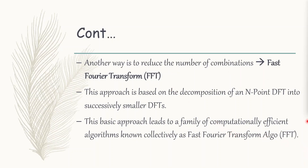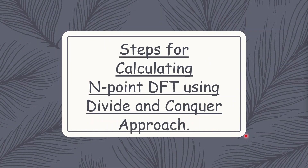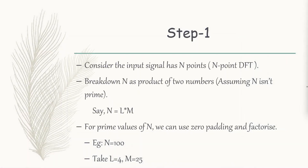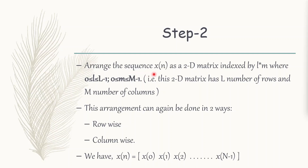In the coming slides I'll explain the steps for computing an N-point DFT using the divide and conquer approach. Step 1: Consider the input signal as N points — so it's called an N-point DFT. Break down N as a product of two numbers, assuming N equals L times M. For prime values of N we can use zero padding and factorize it. For example, if N is 500, we can take L equal to 4 and M as 25. Step 2: Arrange the sequence x(n) as a 2D matrix indexed by small l cross small m, where small l ranges from 0 to capital L minus 1 and small m ranges from 0 to capital M minus 1 — giving a 2D matrix with capital L rows and capital M columns.